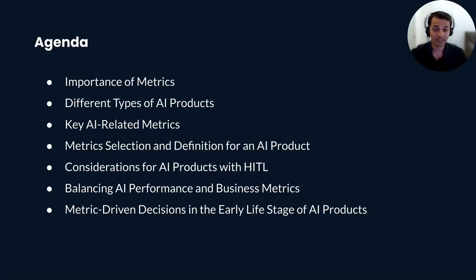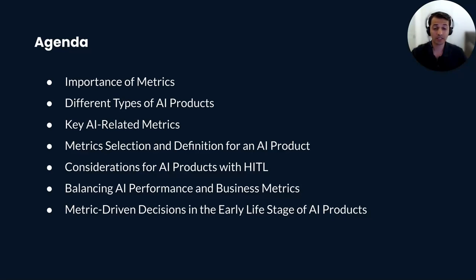We will navigate through the world of AI products, classifying them based on their underlying technology and use cases. We will explore key AI-related metrics for each category and discuss how to select and define these metrics. Throughout this webinar, we will discuss the balance of technical and business metrics, explore the role of human-in-the-loop in AI products, and see how metrics inform crucial decisions, particularly in the early stage of AI product development.